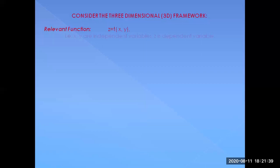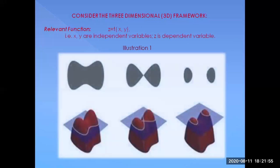As mentioned before, x and y are the independent variables and z is the dependent variable. In the case of Mount Fuji, x and y were the latitudes and longitudes and z was the height at that point. I'll take one mathematical illustration — and note, it's not a mountain. It's basically a mathematical curve.